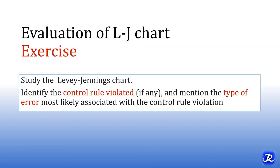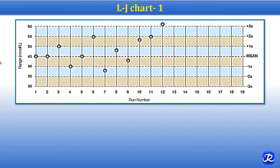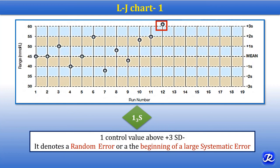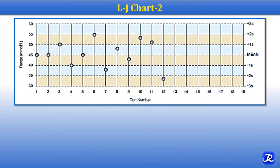Let's evaluate Levy-Jennings charts. The question asks you to study the LJ chart, identify control rules violated, and mention the type of error most likely associated. In LJ chart 1, at one position this control measurement is above the 3 standard deviation limit. When one measurement exceeds 3 standard deviations, it violates the 1-3S rule, which denotes random error or the beginning of a large systematic error.